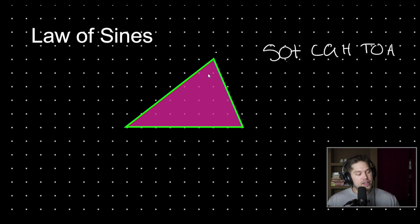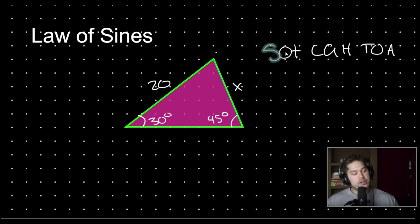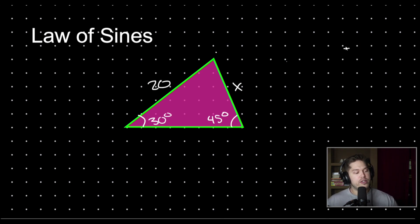So let's take a look at this triangle. Let's say I label this angle 30 degrees, this angle 45 degrees, this length 20, and this length x. And I ask for you to solve for x.